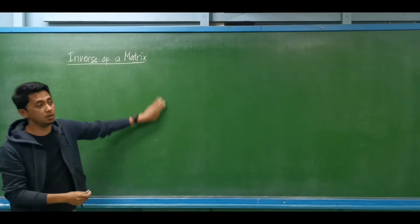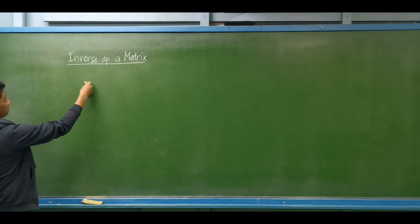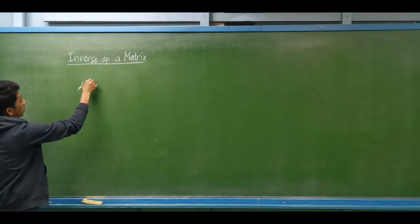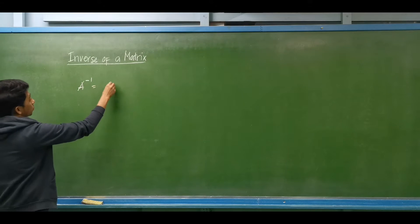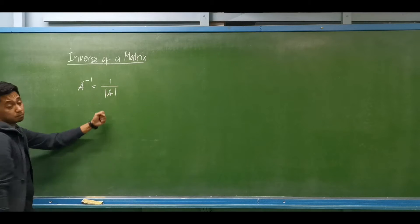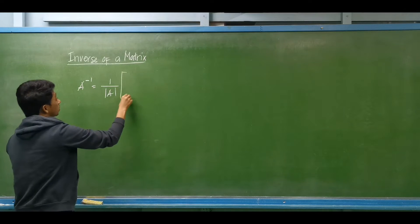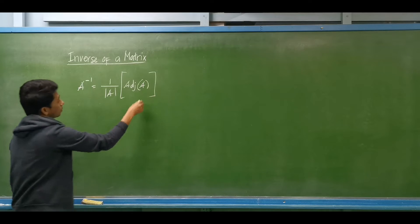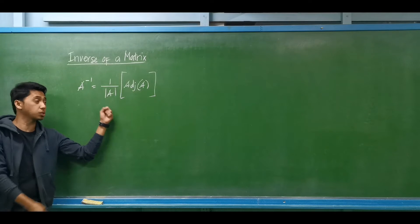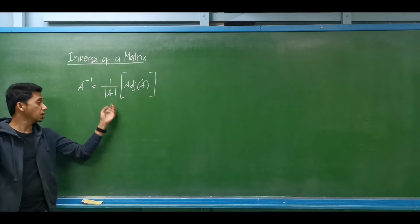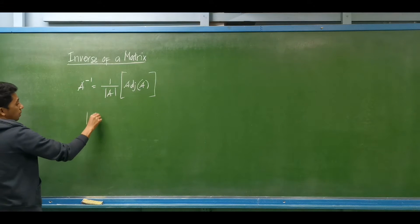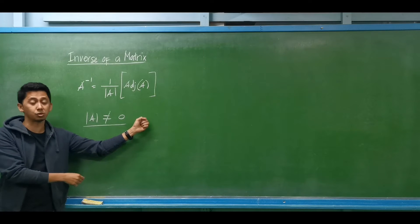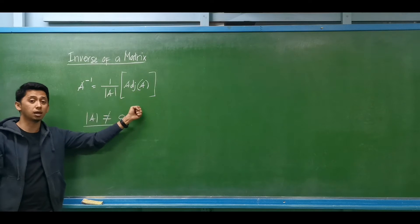Next up we have the inverse of a matrix. Given matrix A, the inverse of matrix A is equal to 1 divided by the determinant of matrix A, multiplied by the adjoint of matrix A. We have to determine the determinant and the adjoint of matrix A. Note that the determinant of matrix A should not be equal to 0, otherwise we will have a zero divisor and the inverse will be undefined.